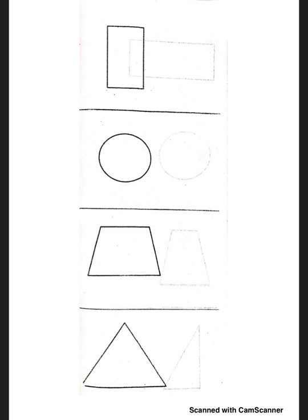Inside the foldable we're looking at the rectangle. Take your rulers — we're only going to use centimeters. Measure the base and give me the measurement. The base is 2.5 centimeters. The height — it could be 4.1 or 4.2 depending on perspective, but we're going to use 4 for the sake of being able to do the math.